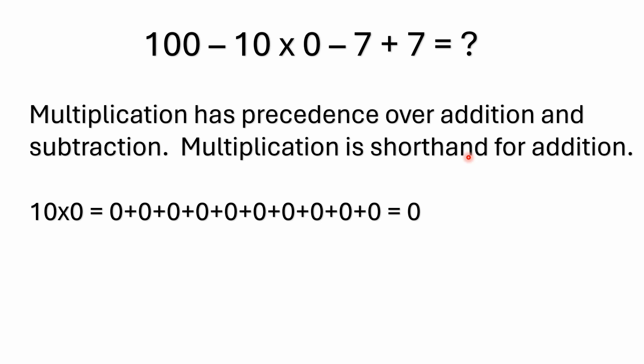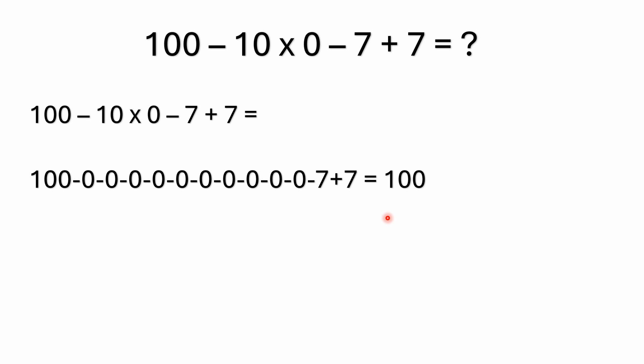Multiplication is nothing more than shorthand for addition. It's just a shorthand, so 10 times 0 is the same thing as adding 10 zeros, and no matter how many zeros you add, it's still 0.